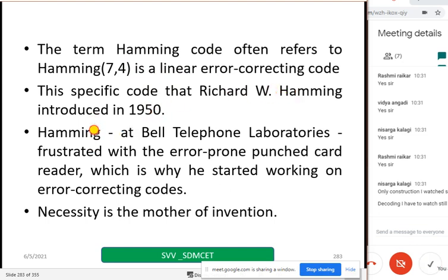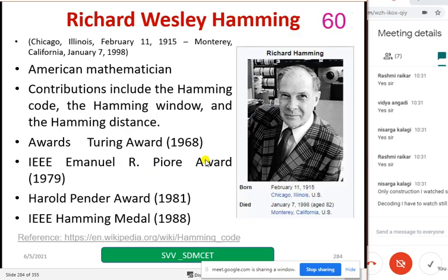Hamming was working at Bell Telephone Laboratories, which you might have heard of. He was frustrated with the error-prone punched card reader, which was a headache for him. Hence, he started working on error control codes or error-correcting codes. As we all know, necessity is the mother of invention. He didn't start wanting to invent something; he had a problem and wanted a solution. During this process, he invented something.